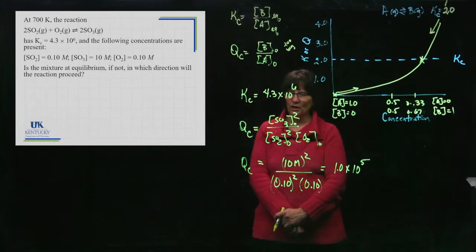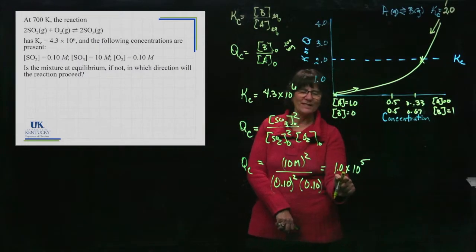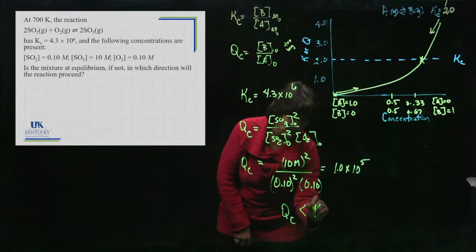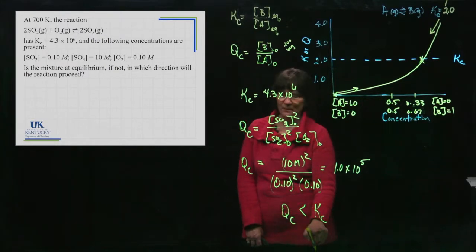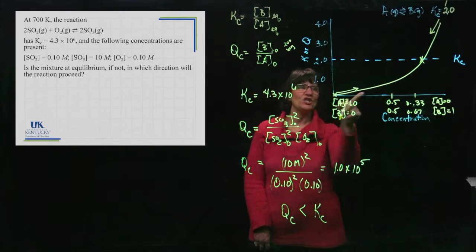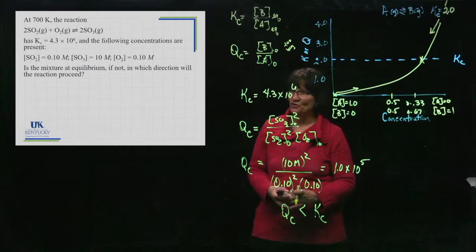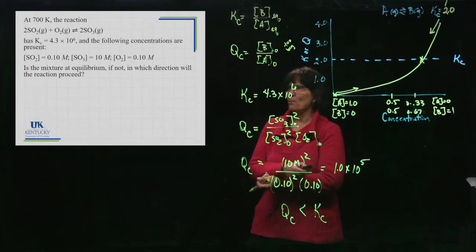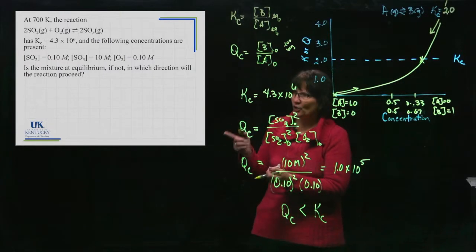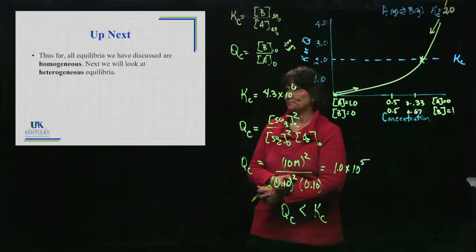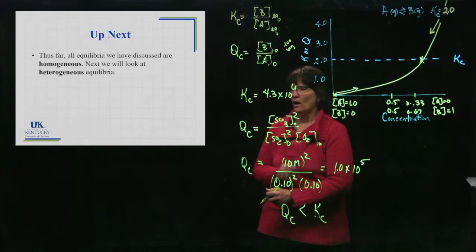That's a pretty big Q, but it's not big enough. Q is smaller. It's less than K. This is where it wants to be. How does it get bigger? It gets bigger by shifting towards the products. So which way will this reaction proceed? It will proceed towards the products and form more SO3 using up some of the SO2 and the O2 along the way.